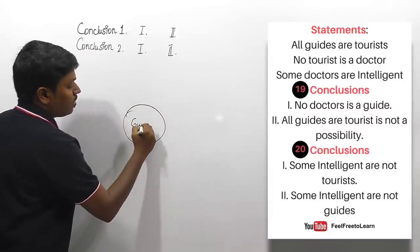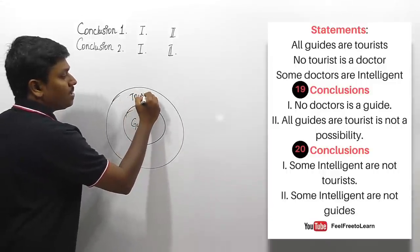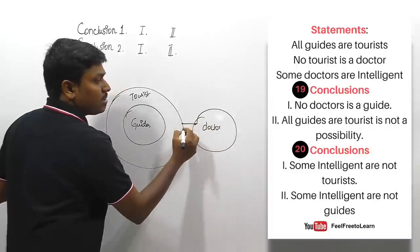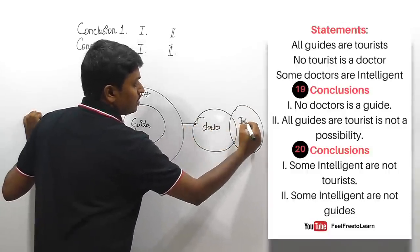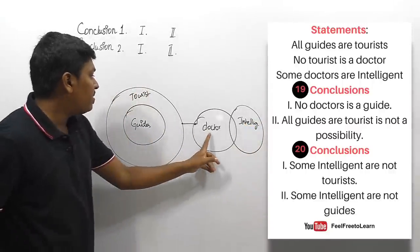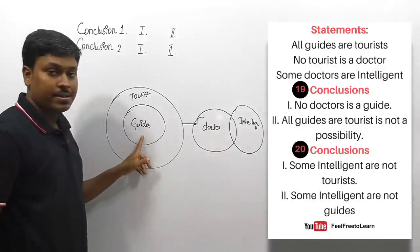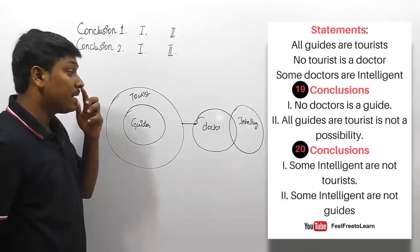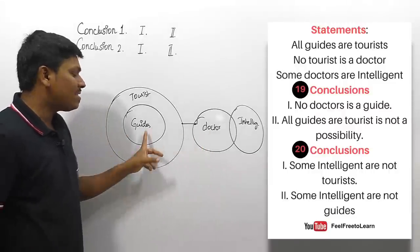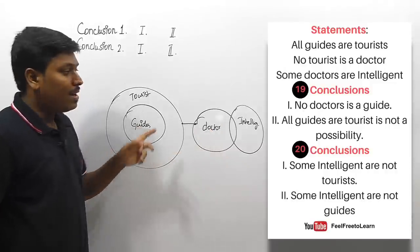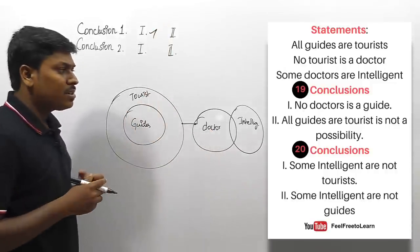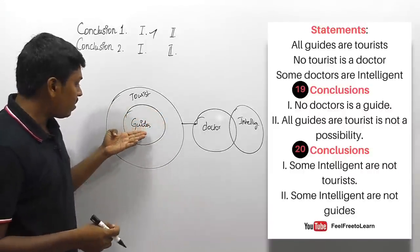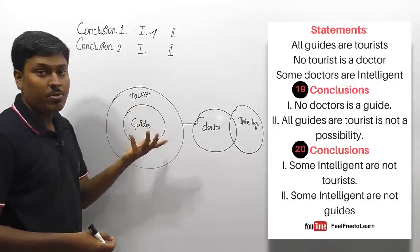Last syllogism question. Statements: 'all guides are tourists,' 'no tourist is a doctor,' and 'some doctors are intelligent.' There is no connection between doctor and tourist, so no possible connection between doctor and guides, but there is a possible connection between intelligent and tourist, and between intelligent and guides. First set, conclusion one: 'no doctor is a guide' — there is no possible connection between doctor and guide, so this is exactly correct. Conclusion two: 'all guides are tourists is not a possibility' — we already know all guides are tourists, so saying it is not possible is wrong.